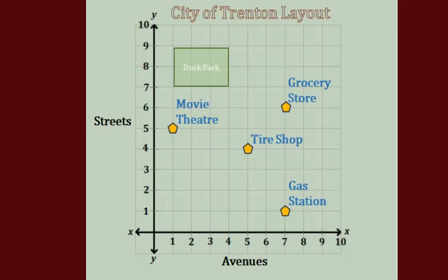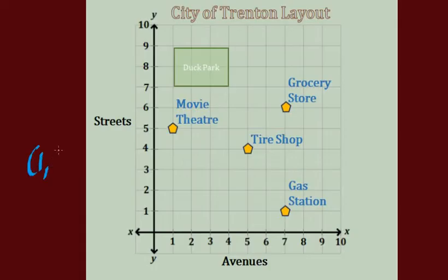How about where's the movie theater? What's the ordered pair for the movie theater? The movie theater is at first avenue — it's one over from our origin. We always start at (0, 0) and count up. So the ordered pair for the movie theater is going to be (1, 5). But what that means in real life is that the movie theater is found at first avenue and fifth street.